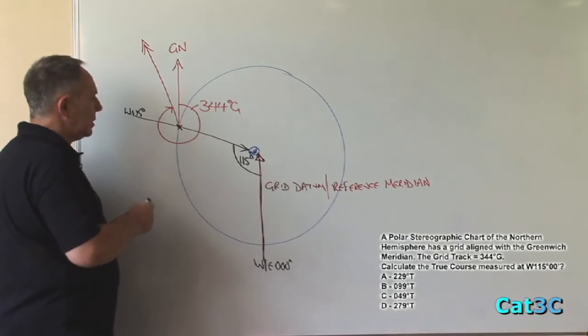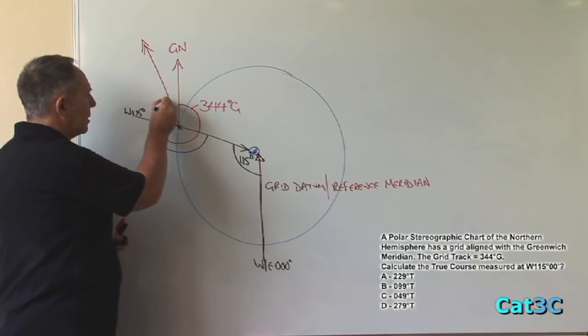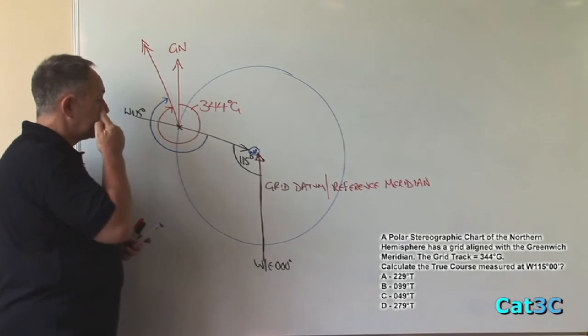So if I measure the track from that position, again clockwise, we can see it is considerably smaller than the grid track.